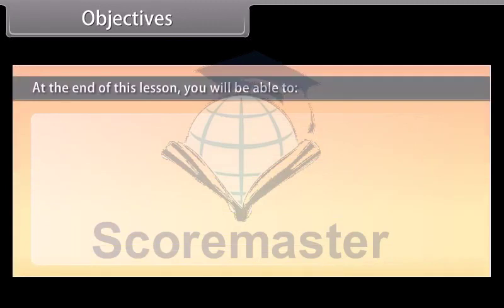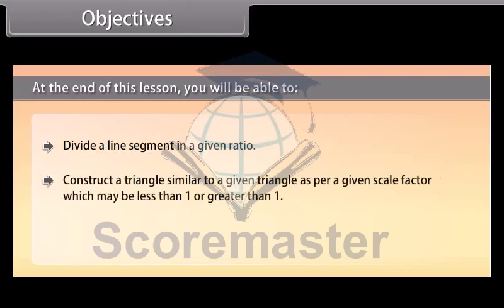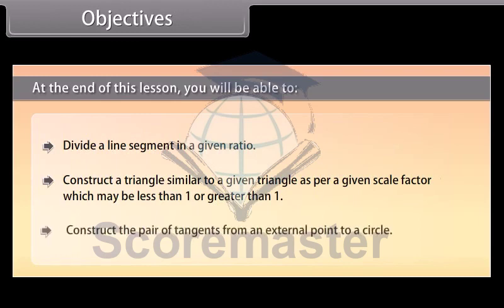At the end of this lesson you will be able to: divide a line segment in a given ratio; construct a triangle similar to a given triangle as per a given scale factor, which may be less than 1 or greater than 1; and construct a pair of tangents from an external point to a circle.